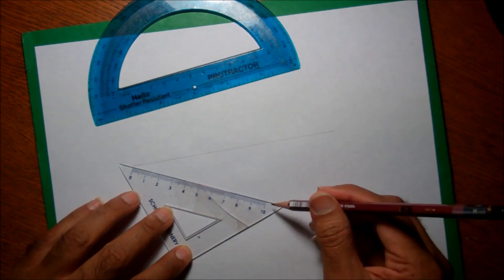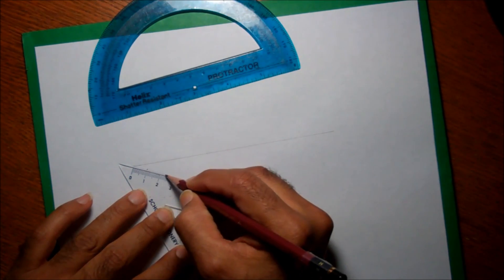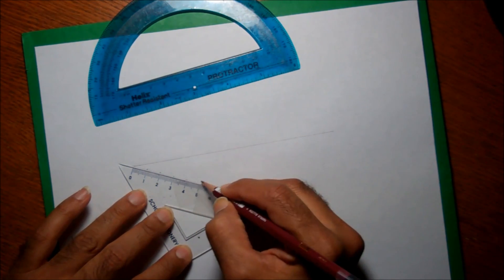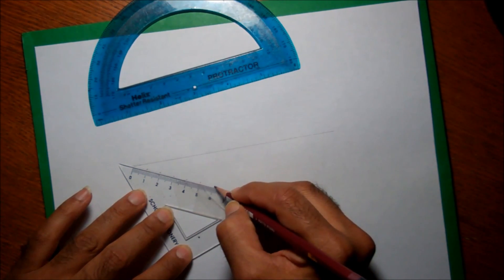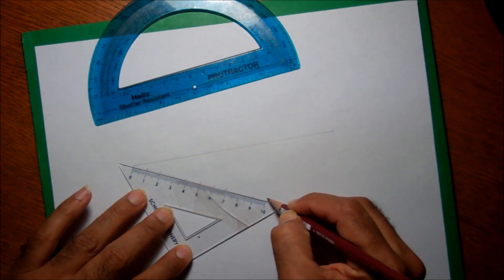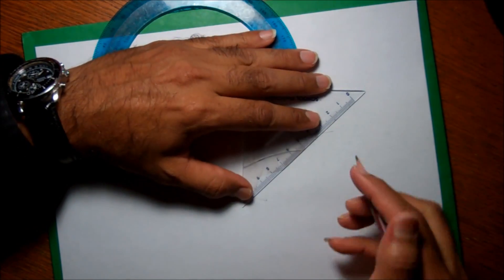And here I can draw 1, 2, 3, 4, 5, 6, 7, 8, 9, and 10. Okay, so now I have these 10 parts.